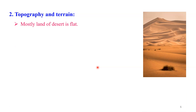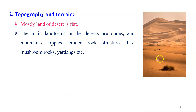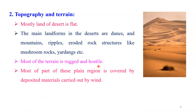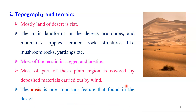Let us see what type of specific topography and terrain we have in this area. Mostly, the land of the desert is a flat region. You can clearly observe large flat areas in most parts of the desert. The main landforms in the desert are dunes — sand dunes — and also wind-eroded rock structures like mushroom rock or yardang. This type of specific landform you will observe in the desert region. Most of this terrain is rough and hostile, and the plain region is covered by deposited material carried by winds, as you can clearly see in this picture.